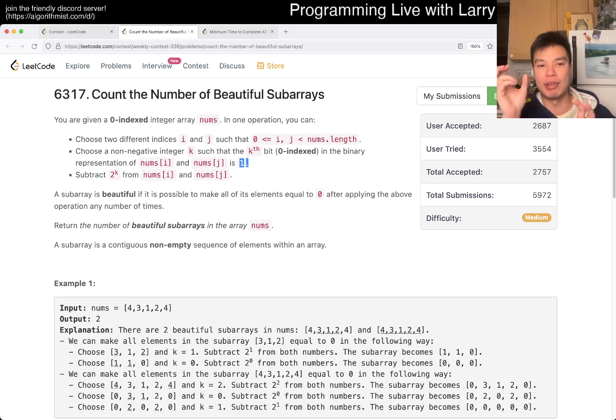Basically, we have a beautiful array if the XOR of that subarray is zero. You can think about it in terms of parity and counting. XOR is a way of counting even number of bits on each digit, so you can think of it that way.